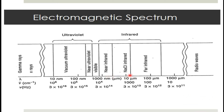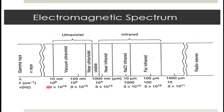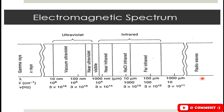The infrared region extends from 0.78 micrometer to 16 micrometer, but for analytical purposes the important region is 2.5 micrometer to 16 micrometer. In units of centimeter inverse — which is most commonly used for the infrared region — this corresponds to 4000 cm⁻¹ to 667 cm⁻¹. Infrared radiation is used for the determination of functional groups in organic compounds.